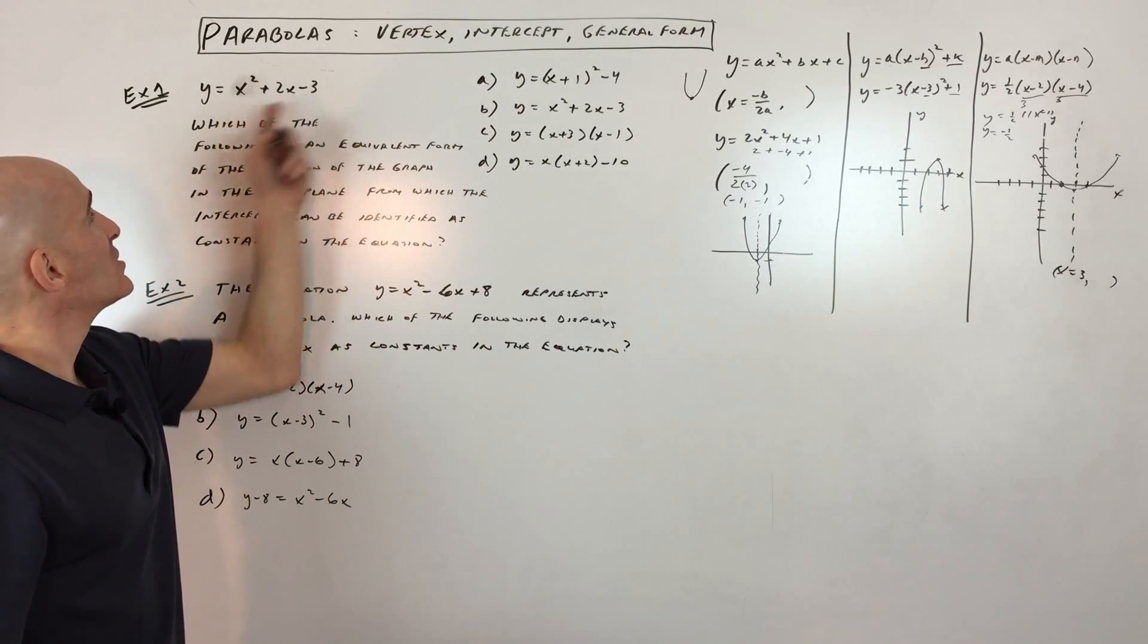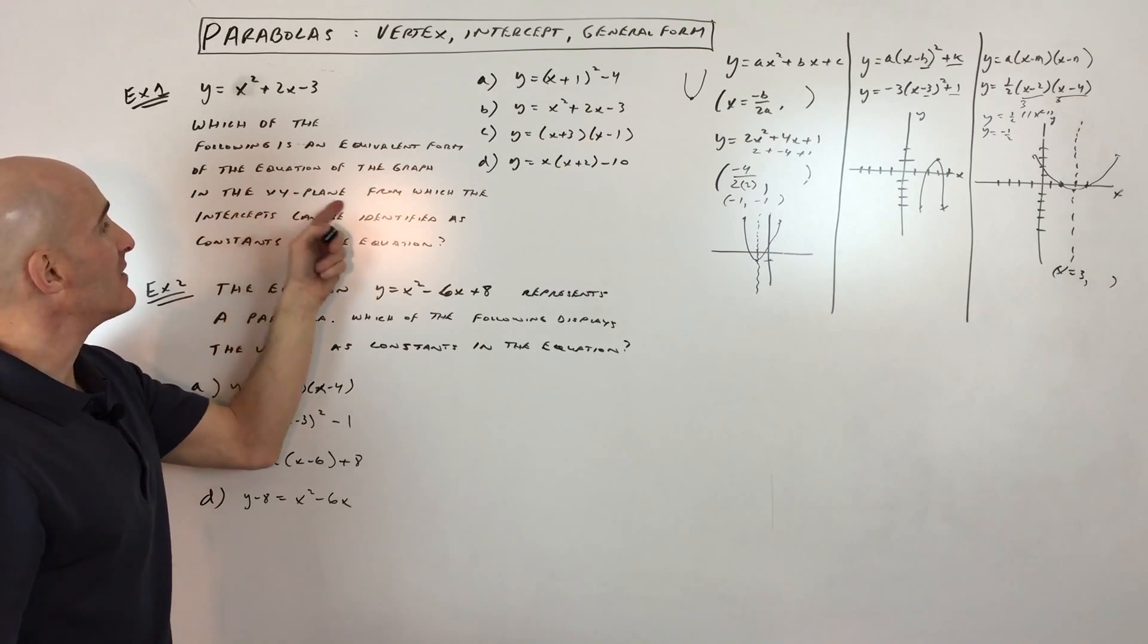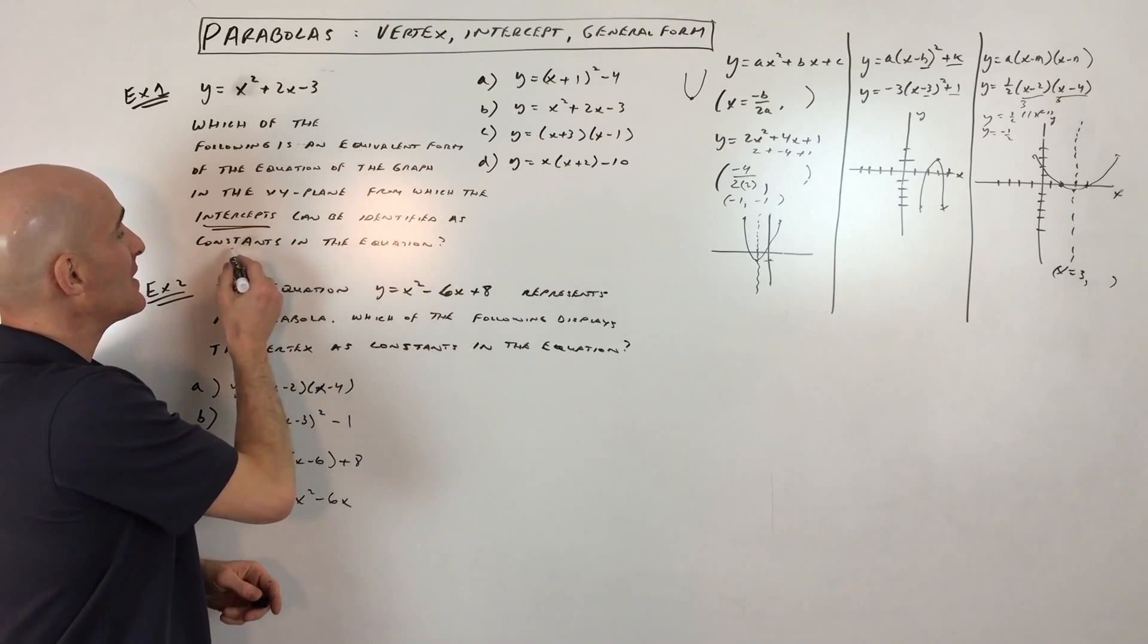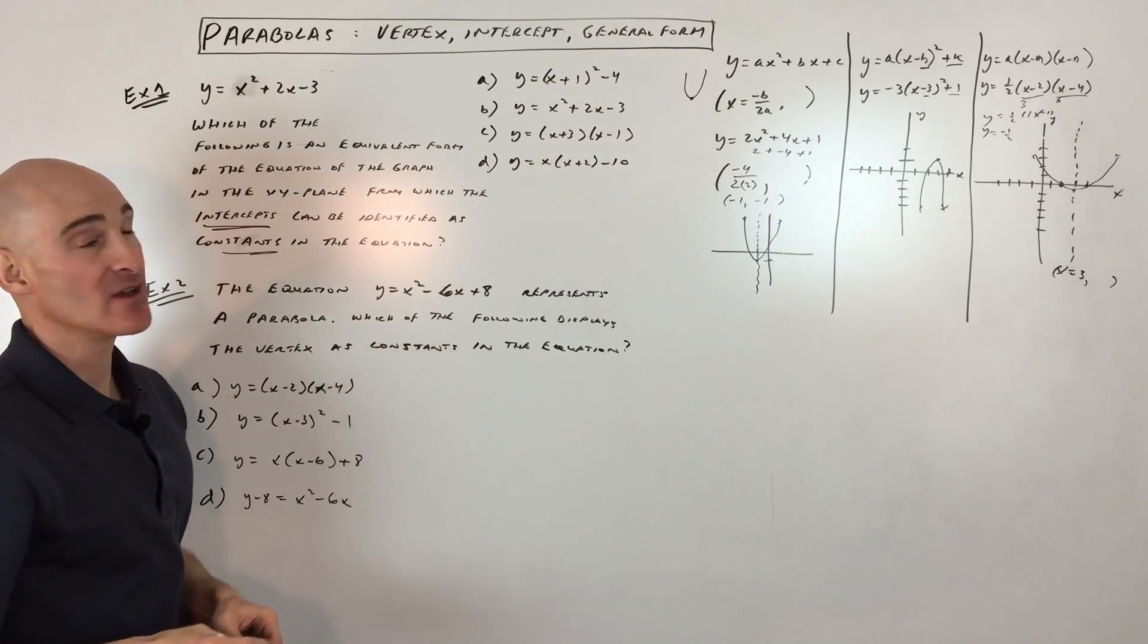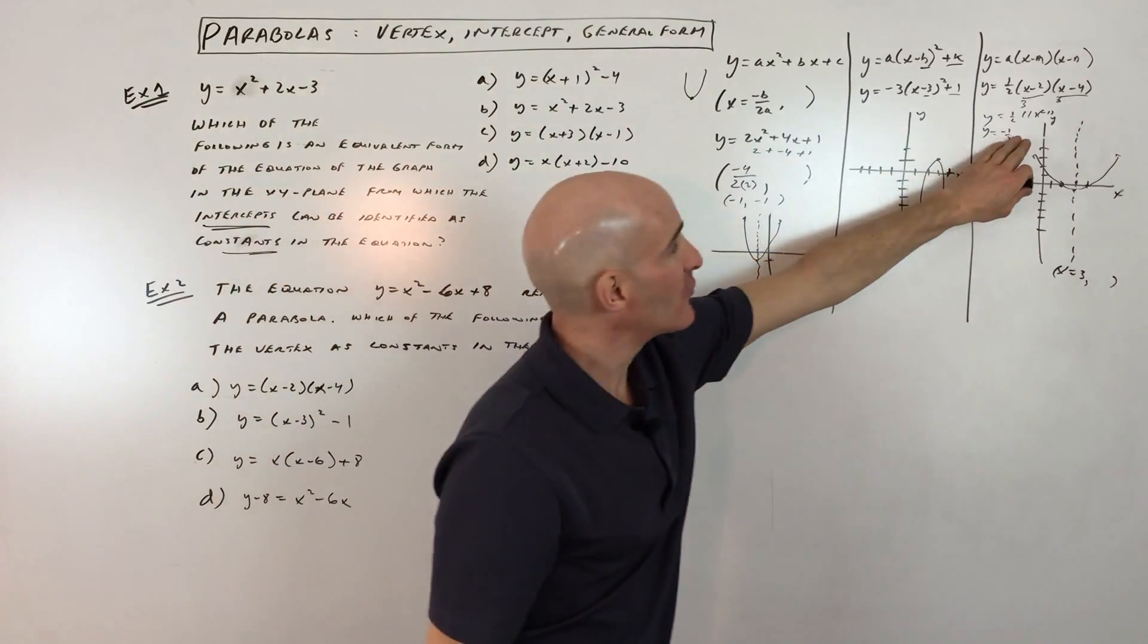They give us this equation, and it says, which of the following is an equivalent form of the equation of the graph in the x-y plane from which the intercepts can be identified as constants in the equation? So they're telling us they want us to put it into intercept form. That's this form right over here, this third one.